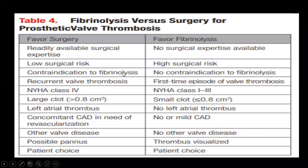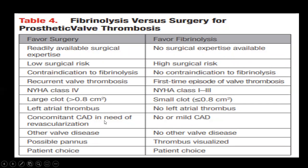Surgery is further favoured over fibrinolysis if TEE shows pannus rather than thrombus, if the clot is very large, or if concomitant coronary or other procedures are required. Indications for fibrinolytic therapy: all right-sided valves, left-sided valves with small or recent-onset thrombus in less symptomatic patients. Indications for emergency surgery: any left-sided valve thrombosis in NYHA Class 4, large thrombus, or mobile thrombus.